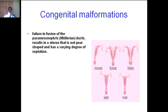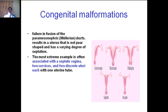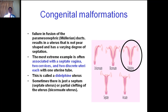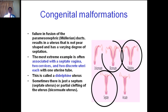Congenital malformations of the uterus result from failure in the fusion of the paramesonephric or Müllerian ducts, resulting in a uterus that is not pear-shaped and has varying degrees of separation. The most extreme example is often associated with a septate vagina, two cervices, and two discrete uteri each with one uterine tube — this anomaly is called didelphic uterus. Sometimes there is just a septum or partial division of the uterus.